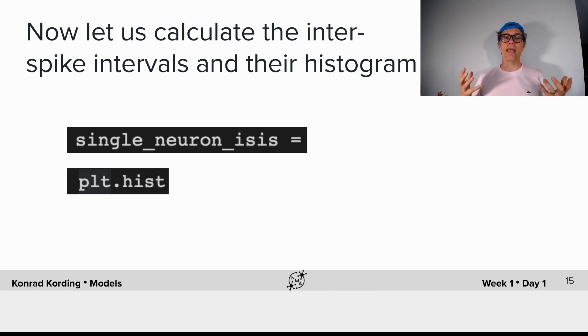Now, let's calculate the inter-spike intervals and the histograms. What do you need to do? You will need to calculate what the inter-spike intervals are. And of course, we will again want to look at the histograms, in this case for an individual neuron.